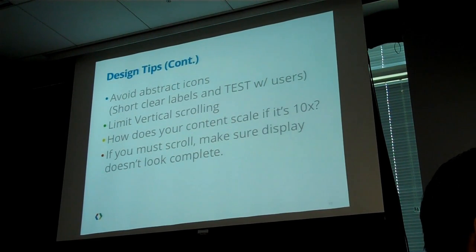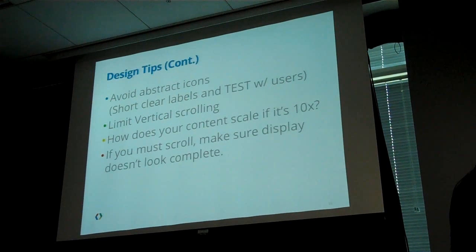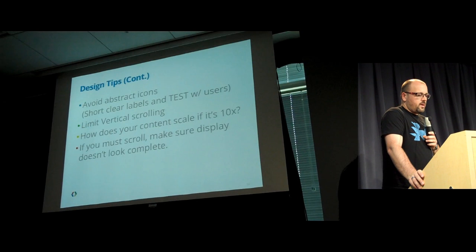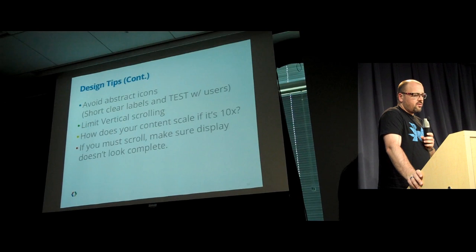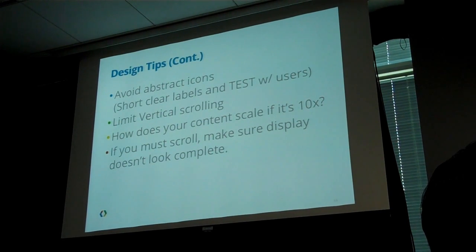Avoid abstract icons. I keep seeing the three-and-a-quarter-inch floppy disk icon that people use for saving a document. I can vaguely remember why it should mean 'save,' but people who are half my age will not figure it out. Use icons that make sense and use icons with a label. Limit scrolling. Think about how your content looks on a 70-inch screen — use high-resolution assets. If you do scroll, make sure there's a really clear indication. Users in trials could never figure out there's more on the screen or how to get to the bottom. Don't have navigation elements that scroll out of the screen — if you have a 'next' button, it should not be below the fold.